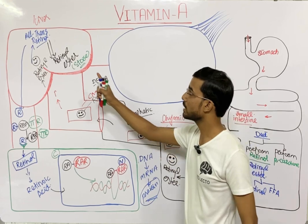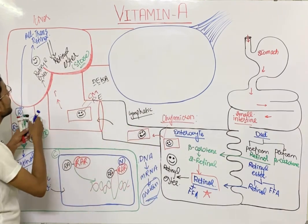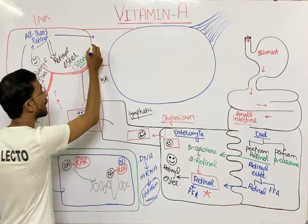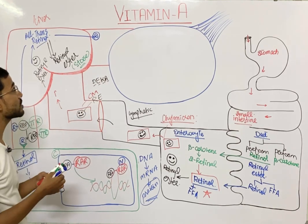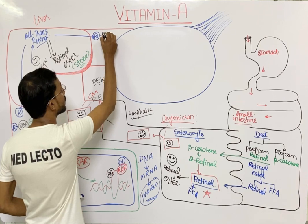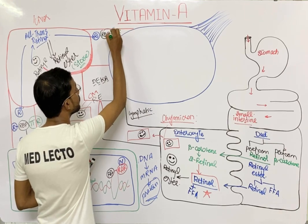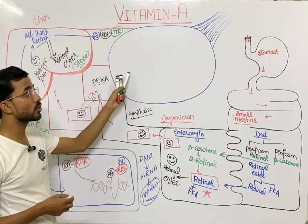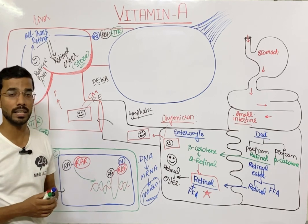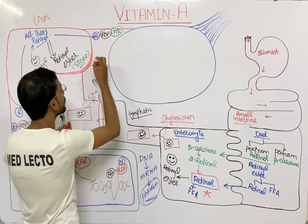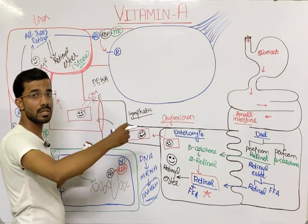The third pathway: all-trans retinol again enters the bloodstream and binds to retinol binding protein along with transthyretin. This complex travels toward the eye, specifically to the rod and cone cells of the retina. Only the retinol enters into these cells.